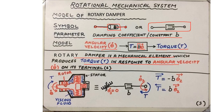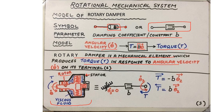A typical rotary damper based on viscous fluid has two parts: the stator and the rotor. The stator is assumed to be fixed and stationary, while the rotor rotates with some velocity theta-dot. What opposes this rotation is the viscous fluid trapped between the stator and the rotor. The viscosity and other fluid parameters dictate the damping coefficient b, and this viscous fluid is responsible for generating the opposing torque T.